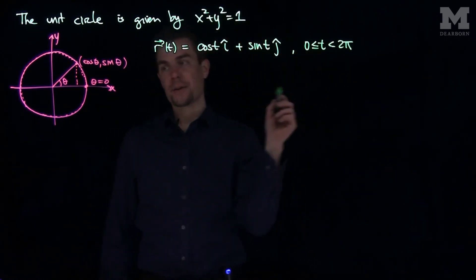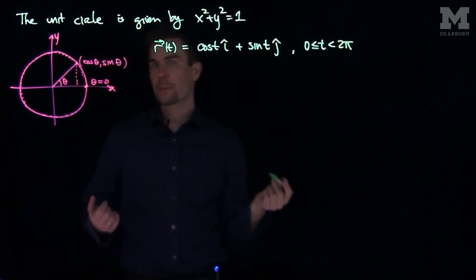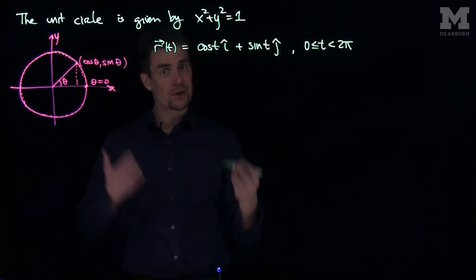Now, if we were to include 2π in this interval, I would get to the point (1,0) two times. So this is the standard parameterization of the unit circle.